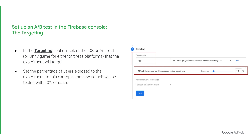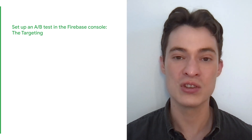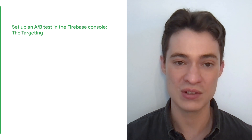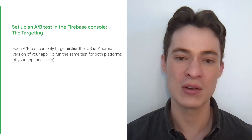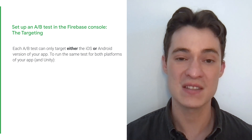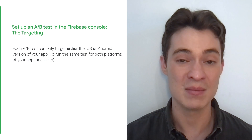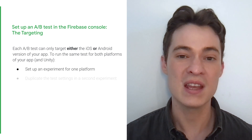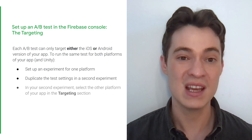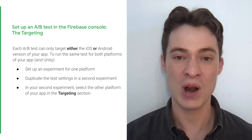In the Targeting section, select the iOS or Android app, or Unity game, that the experiment will target. You would also need to set the percentage of users who will be exposed to the experiment — in this case, we will use 10% as an example. This does not mean that 10% of your users will see the new ad format, but rather 10% of your users will be a part of the experiment to see or not see the new ad format. You can leave the rest of the settings as defaults. Note that each A/B test can only target either the iOS or Android version of your app. To run the same test for both platforms, set up an experiment for one platform, then duplicate the test settings in a second experiment, selecting the other platform in the Targeting section.